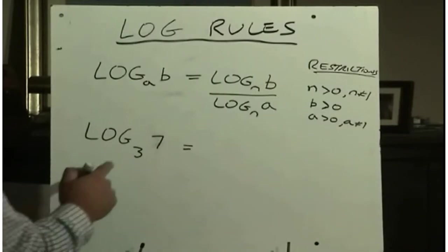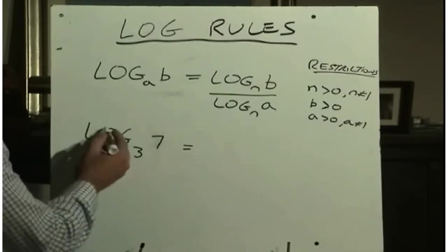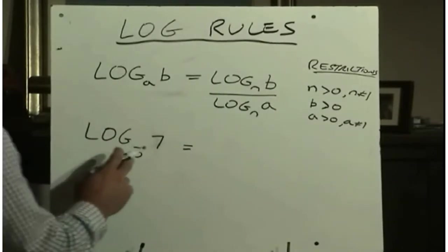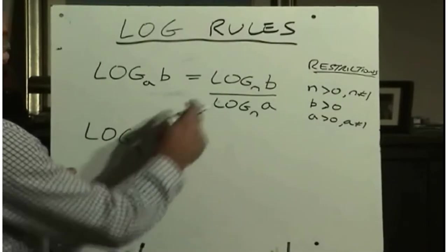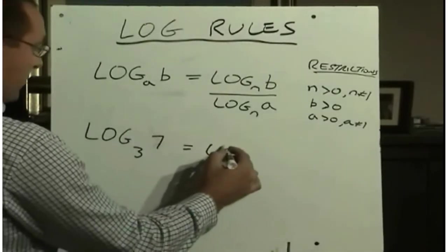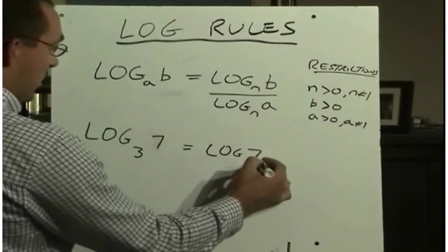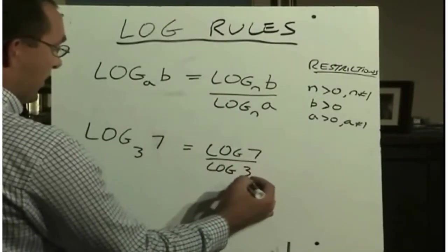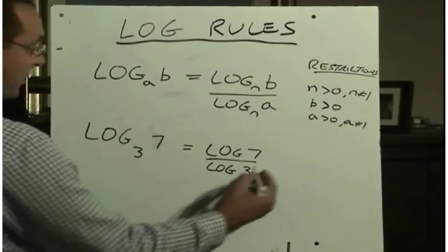The problem with your calculator is your calculator only does base 10. It actually does one other base 2, we'll talk about that later. But it definitely will not do base 3. So what we need to do is use this rule and convert this to log 7 divided by log 3. So I'm going to go with base 10 because that's what the calculator uses.